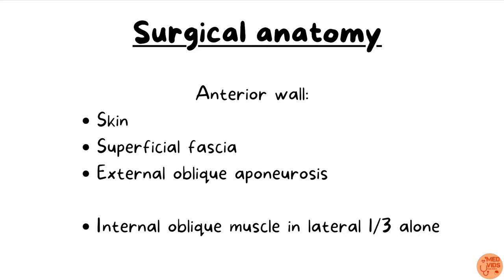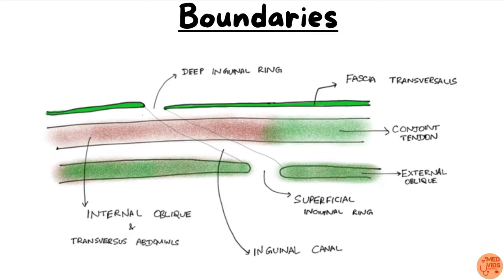The boundaries of the inguinal canal: the anterior wall is formed by skin, superficial fascia, and external oblique aponeurosis throughout the canal. In the lateral one-third of the canal alone, there is an additional structure forming the anterior wall — the internal oblique muscle. The inguinal canal extends from the deep inguinal ring to the superficial inguinal ring. Throughout its extent, the external oblique aponeurosis forms the anterior boundary, while in the lateral one-third alone, the internal oblique muscle contributes as well.